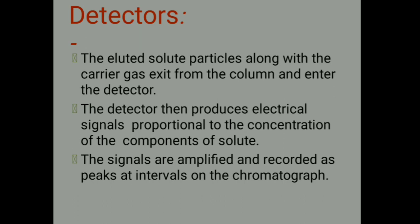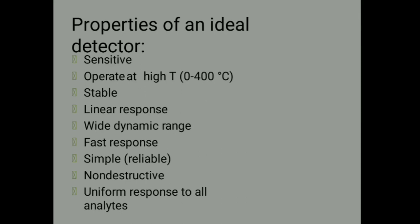Next we have detectors. The eluted solute particles along with the carrier gas exit the column and enter the detector. The detector then produces an electrical signal proportional to the concentration of the components of the solute. The signals are amplified and recorded as peaks at intervals on the chromatogram. Properties of an ideal detector: sensitive, able to operate at temperatures around 0 to 400 degrees Celsius, stable and reproducible, linear response, wide dynamic range, fast response, simple and reliable, non-destructive, and uniform response to all analytes.